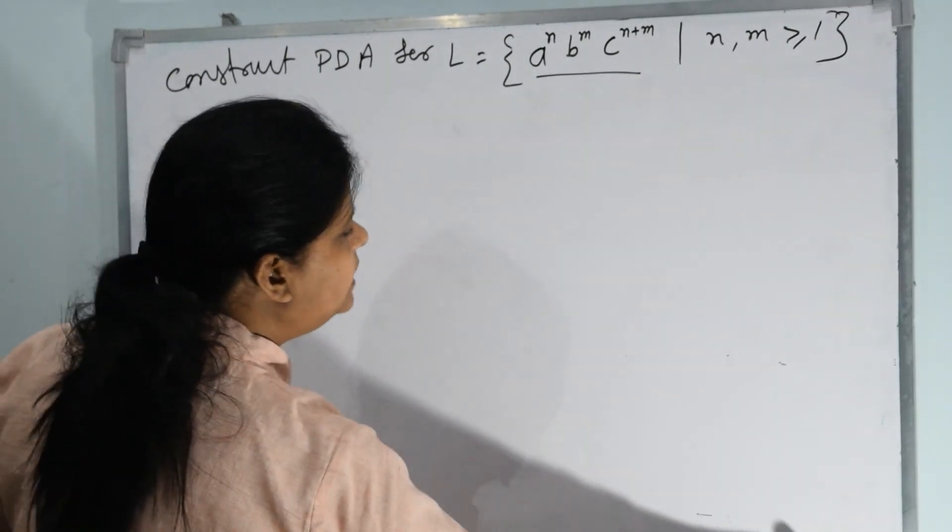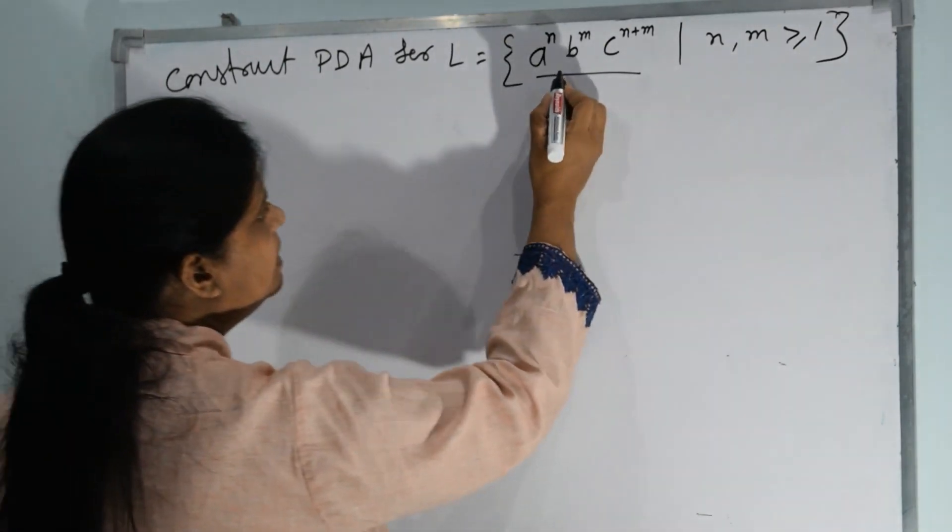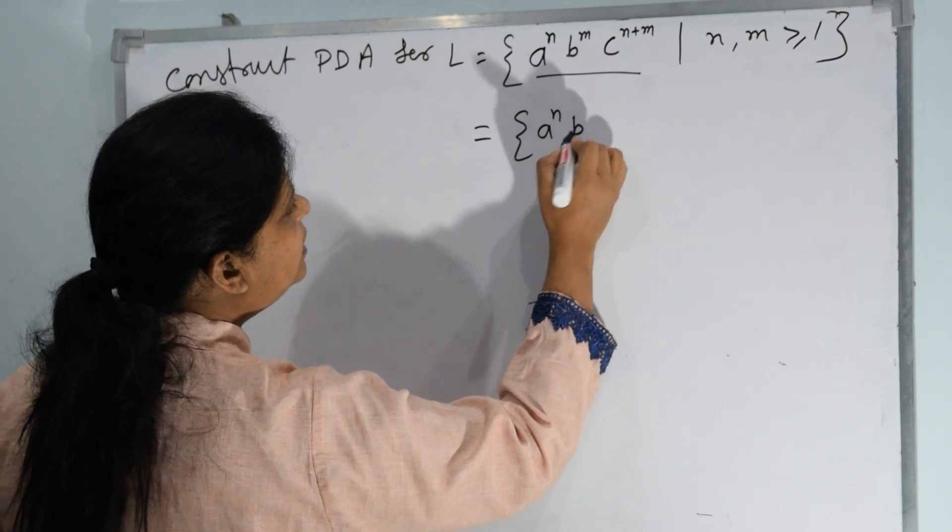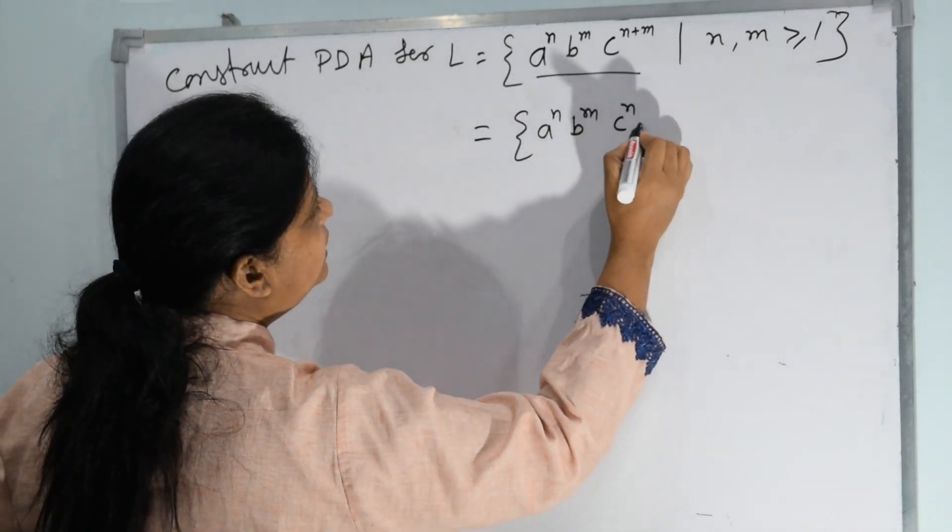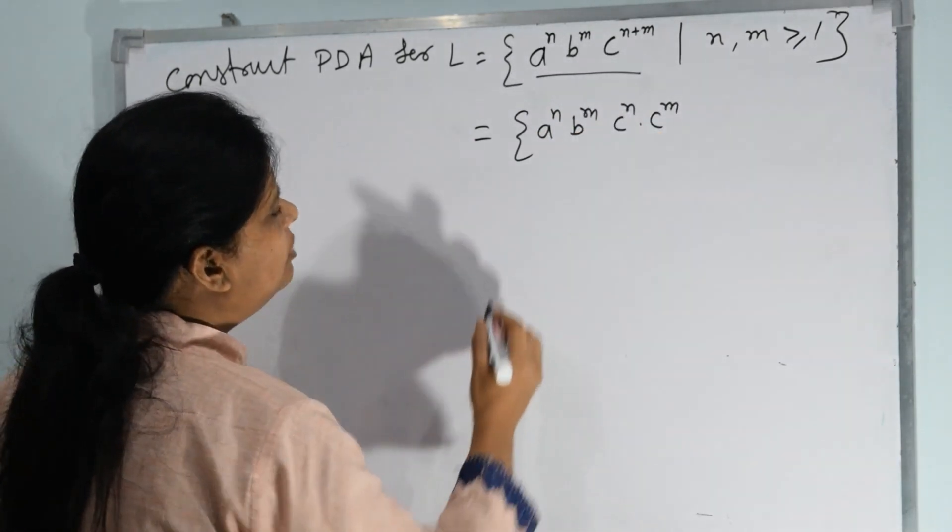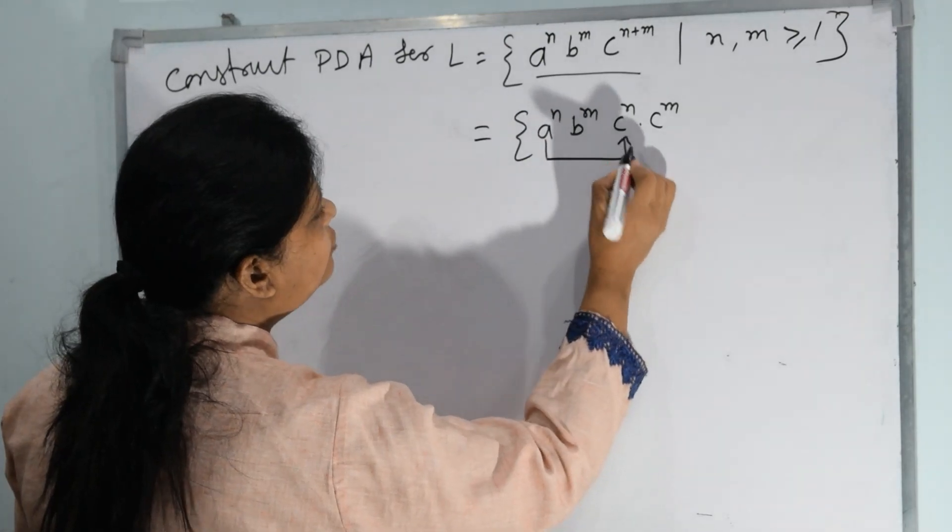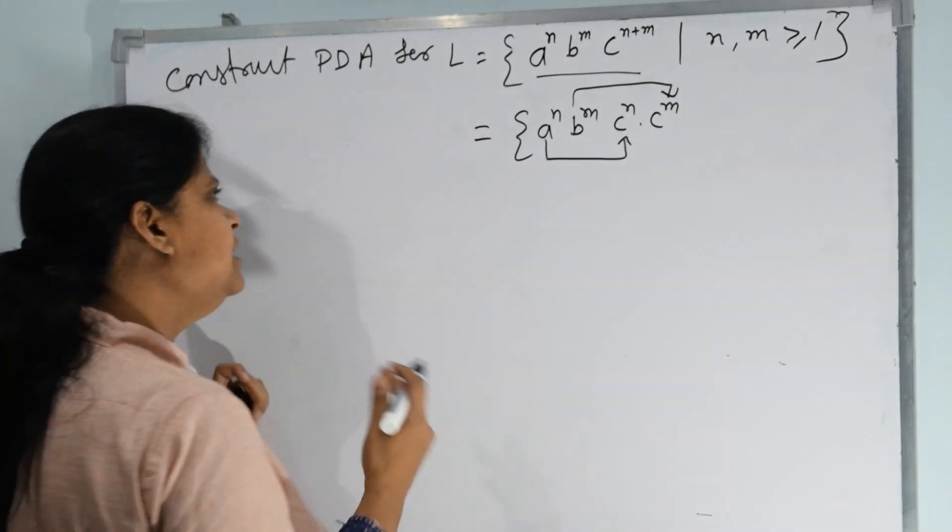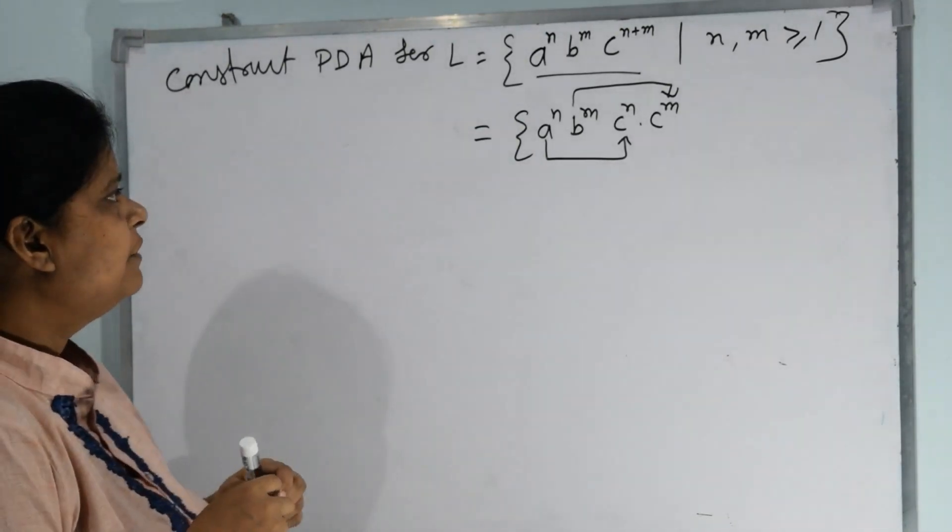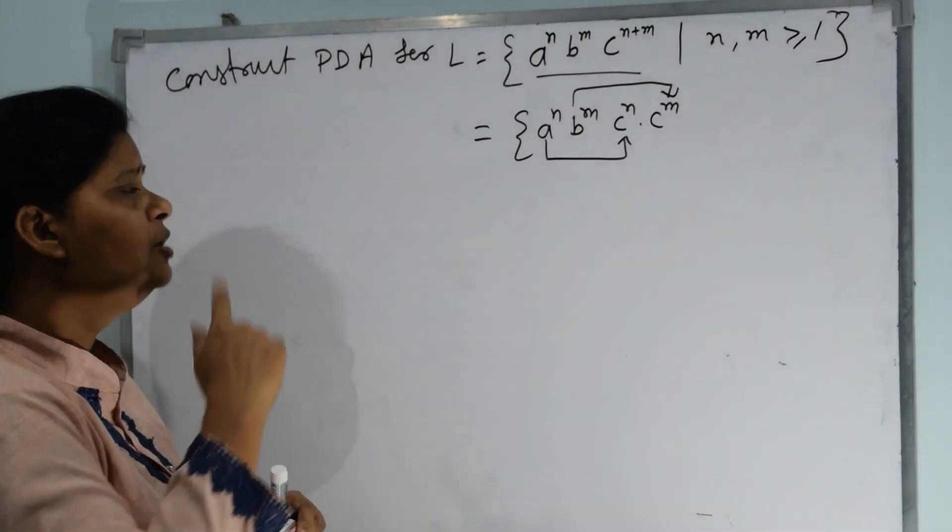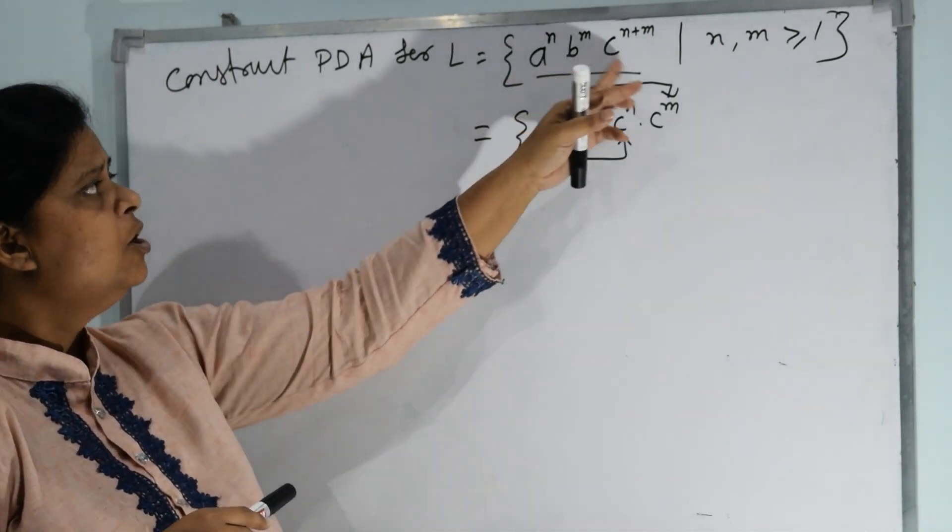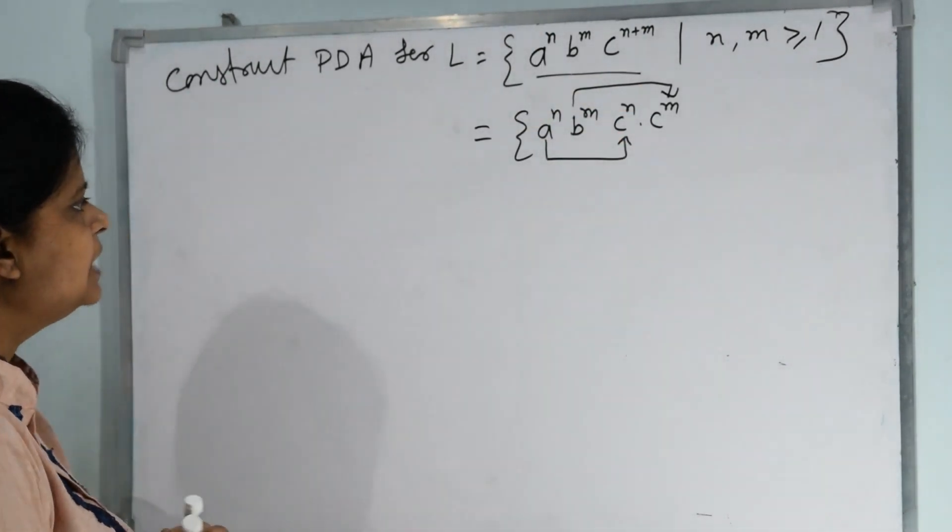Now I want to tell you similarly, here we have A^N B^N C^(N+M). So you can write here A^N B^M C^N times C^M. So if you write here, A is equivalent to C. Similarly, B's value is C. So I mean you can say number of A plus number of B is equivalent to the number of C. Both combined strings are equal. In this case, what will we do?